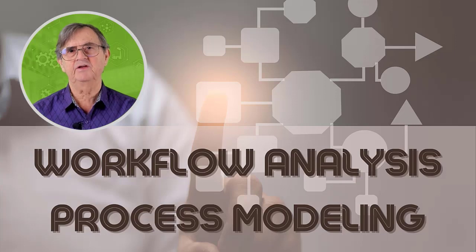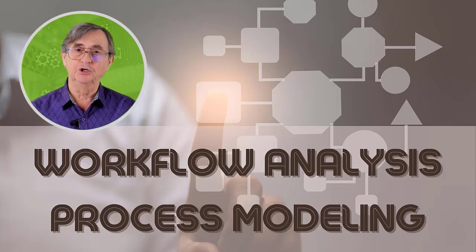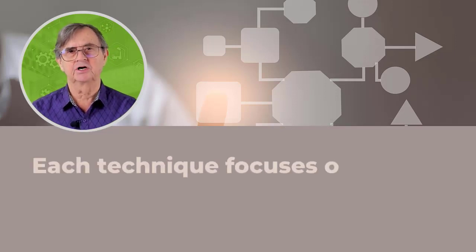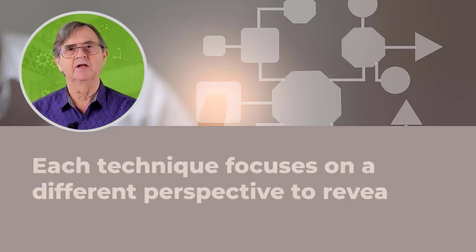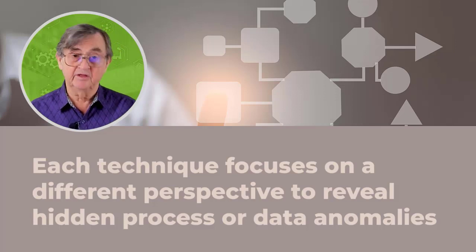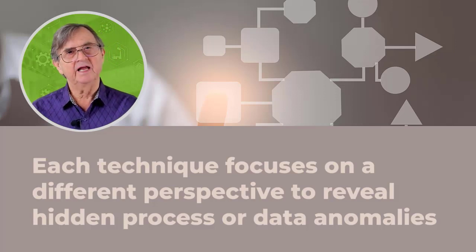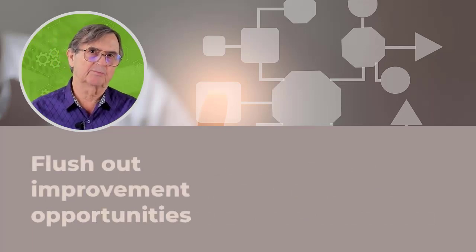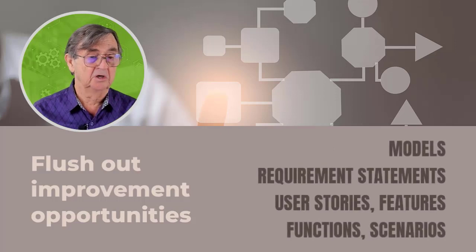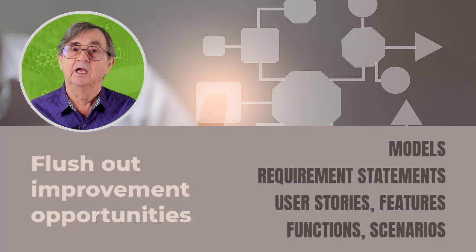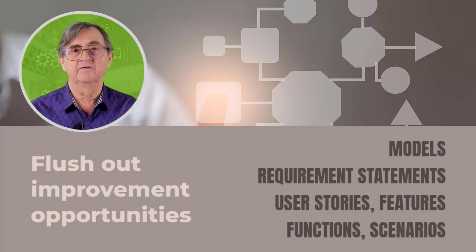In this section, I introduce specific analysis techniques that you can use once you have a data flow diagram. Each technique focuses on a different perspective to reveal hidden processes or data anomalies, letting you and your domain experts discuss potential or actual problems that need to be solved. The end goal of each technique is to flush out improvement opportunities — whether you express those opportunities in the form of models, requirement statements, user stories, features, functions, scenarios, or any other form depends entirely on your software development methodology.